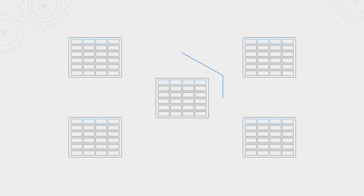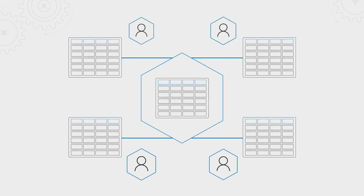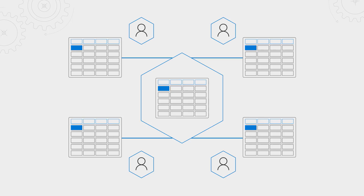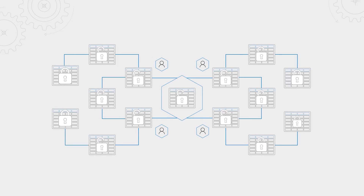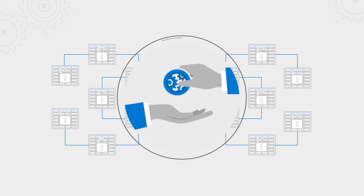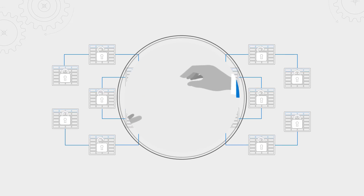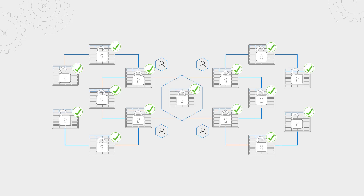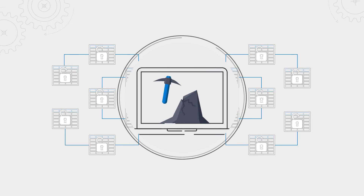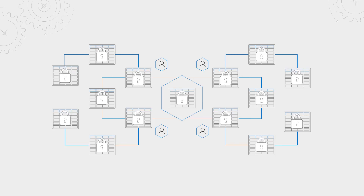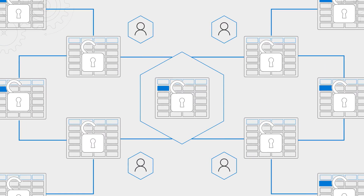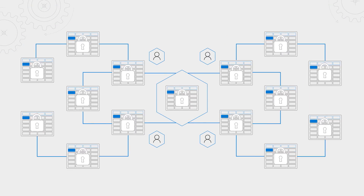Think of it as a fancy Excel spreadsheet or database with these two unique characteristics. It's distributed, so it's shared between multiple parties — each party has an identical copy or version of the ledger. Whenever a new transaction is committed, each participant on the network's nodes are updated. The ledger is also cryptographically immutable, so if I want to post a transaction, the network participants must agree that that transaction is true or authentic. This is done using a consensus mechanism, and once the transaction is committed to the ledger, it's signed and hashed and cannot be changed later.